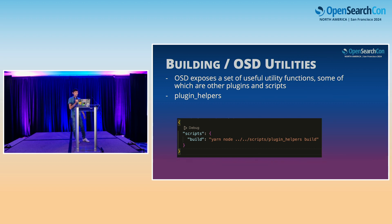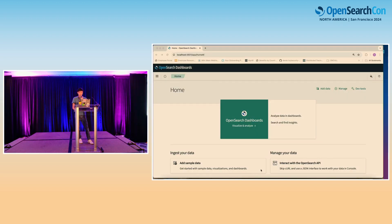OpenSearch Dashboards will build your plugin using a useful set of utility functions, some of which are other plugins and/or scripts that live within the OpenSearch Dashboards repository. In this demo, we're going to utilize the plugin helpers utility function, which exposes a build function that will build an executable zip of your plugin. Next we'll see a quick demo video of the build process and installation into a live running instance.